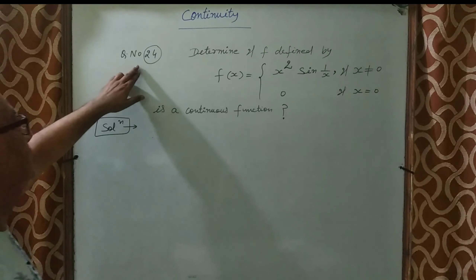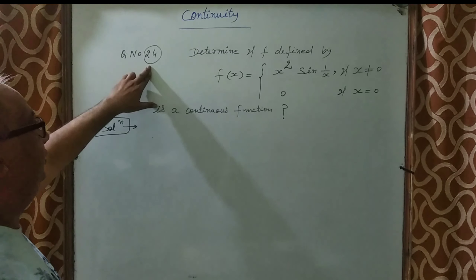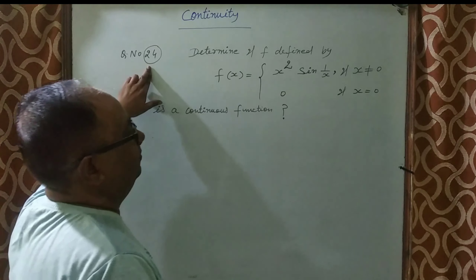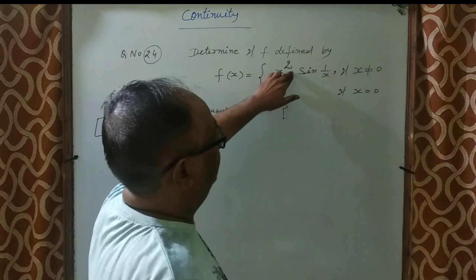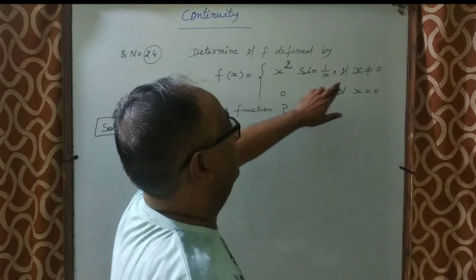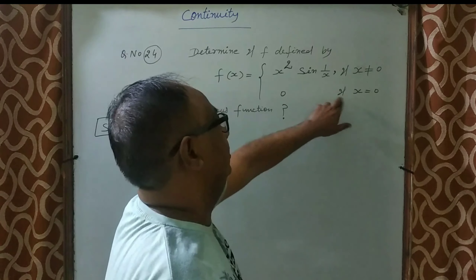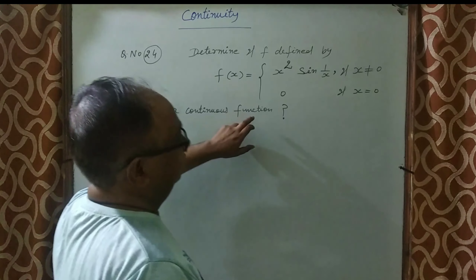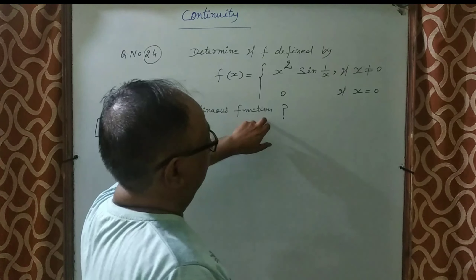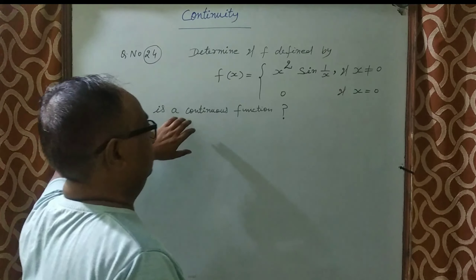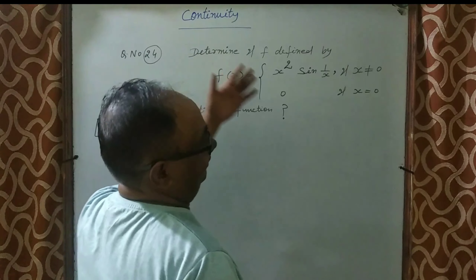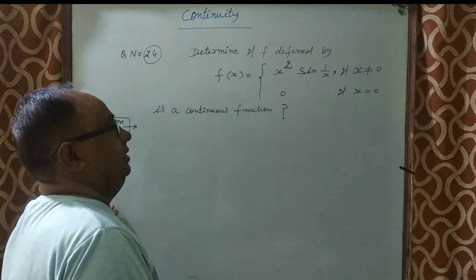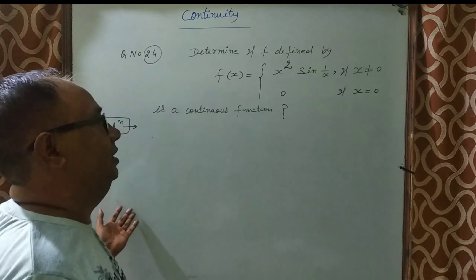Question 24 from NCERT: if f is defined by f(x) = x²sin(1/x) when x ≠ 0, and f(0) = 0, is a continuous function — then we need to discuss the values of x for which continuity holds.